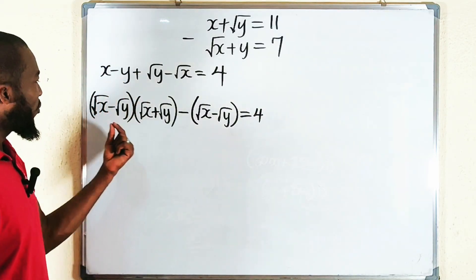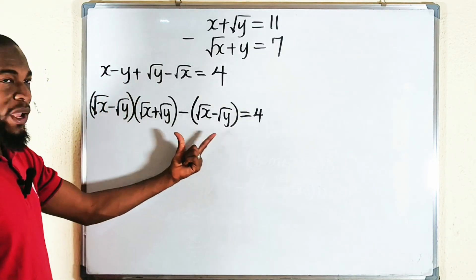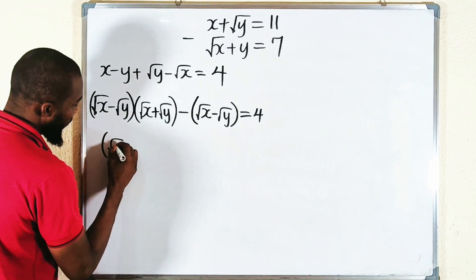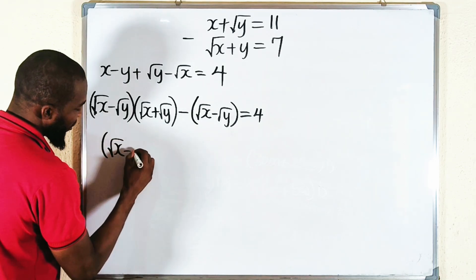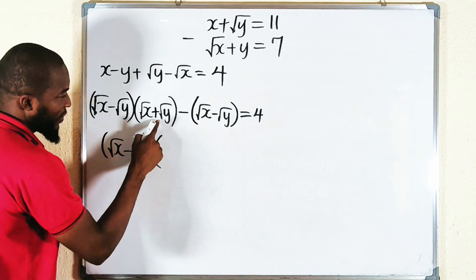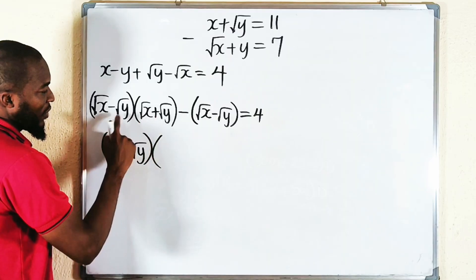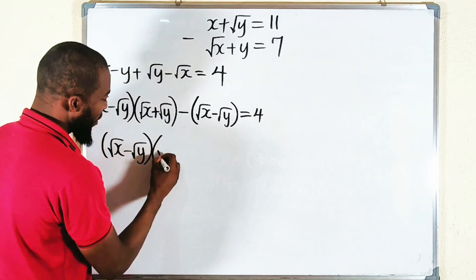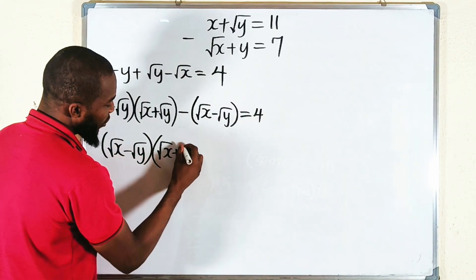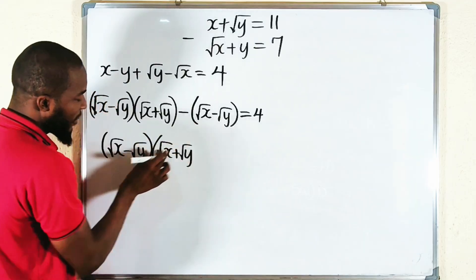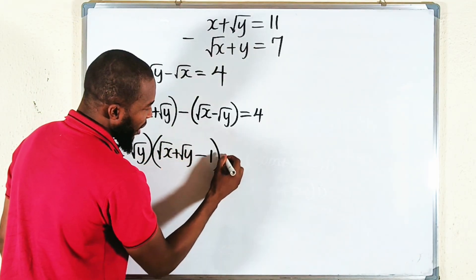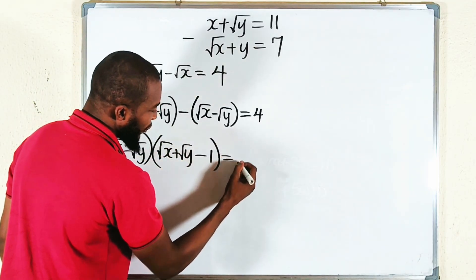We have square root of x minus square root of y in common, so let's factor it out. We have square root of x minus square root of y here, and from the second term, square root of x plus square root of y. That divided by itself is 1, so we have minus 1. And this equals 4.